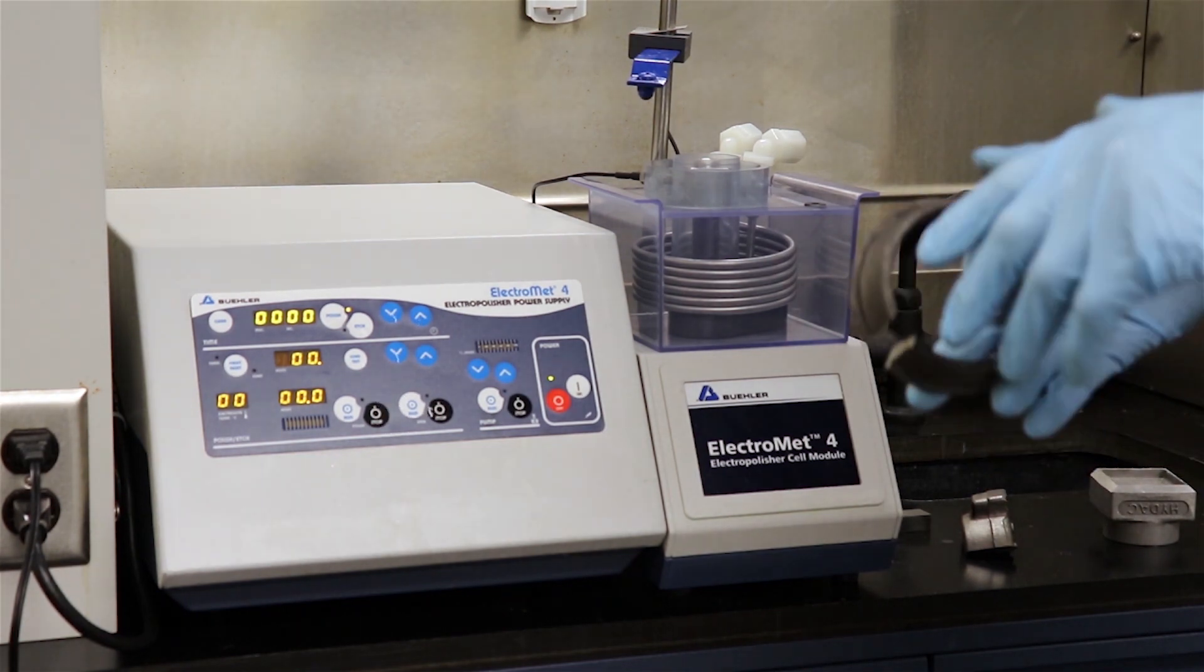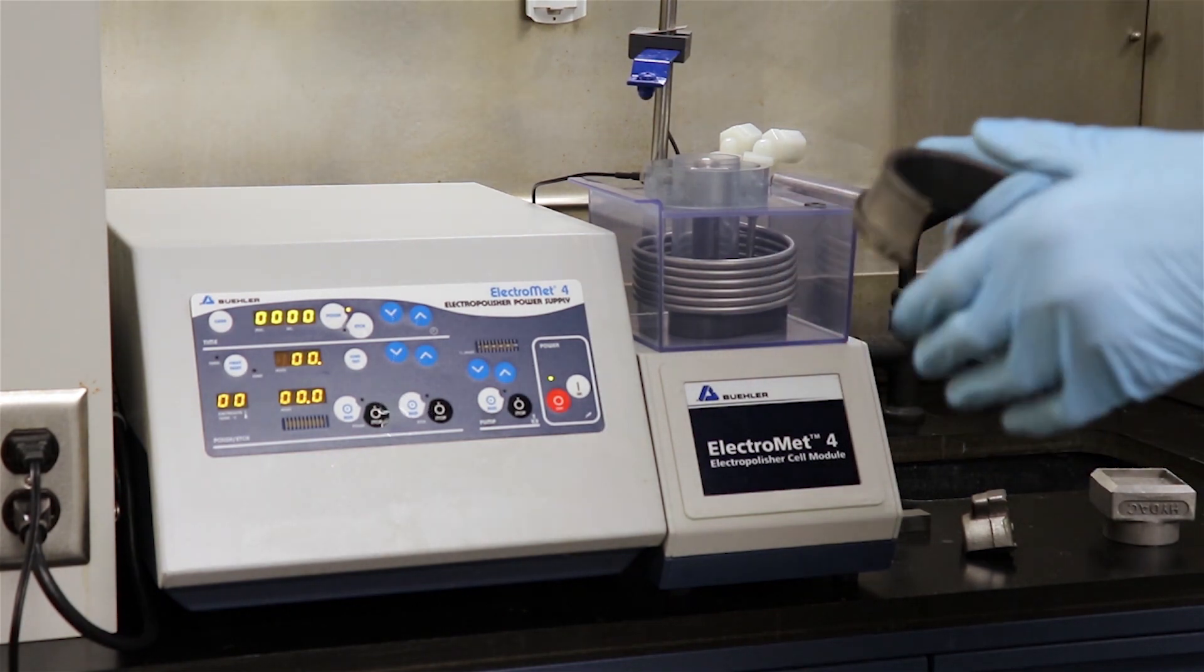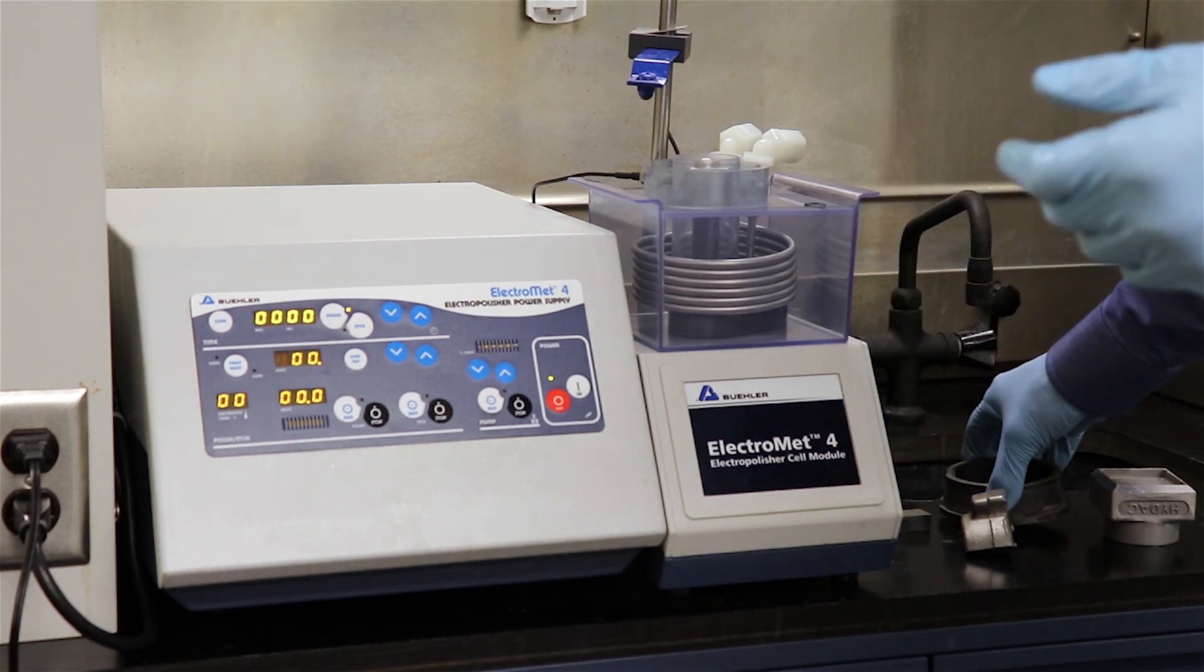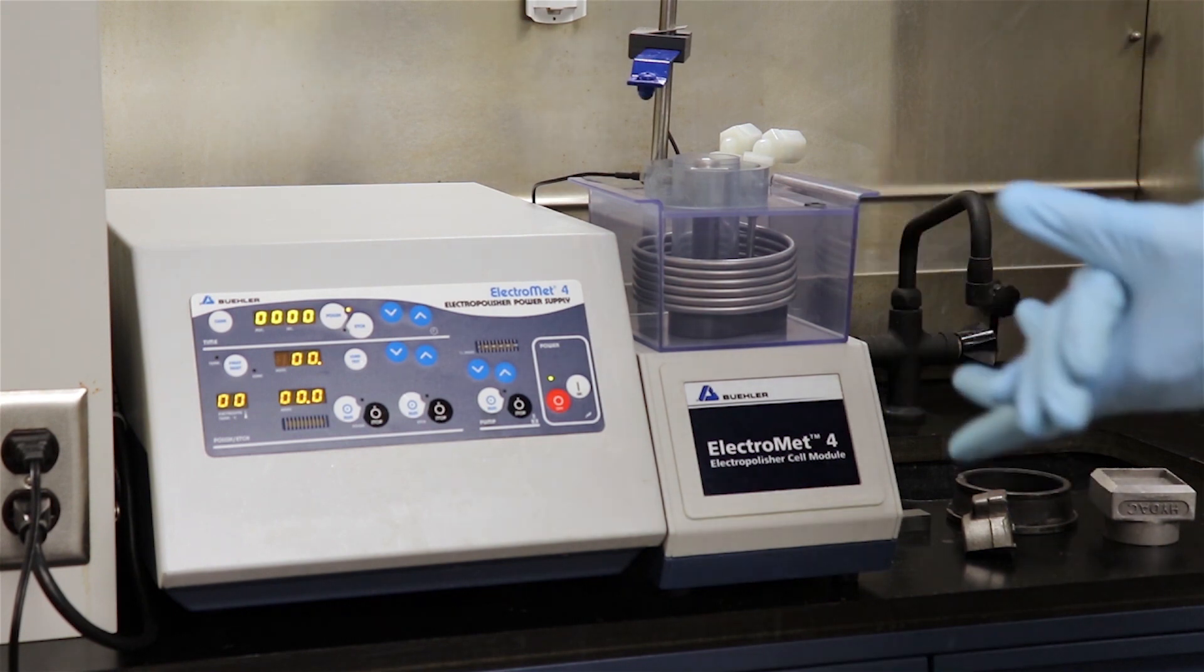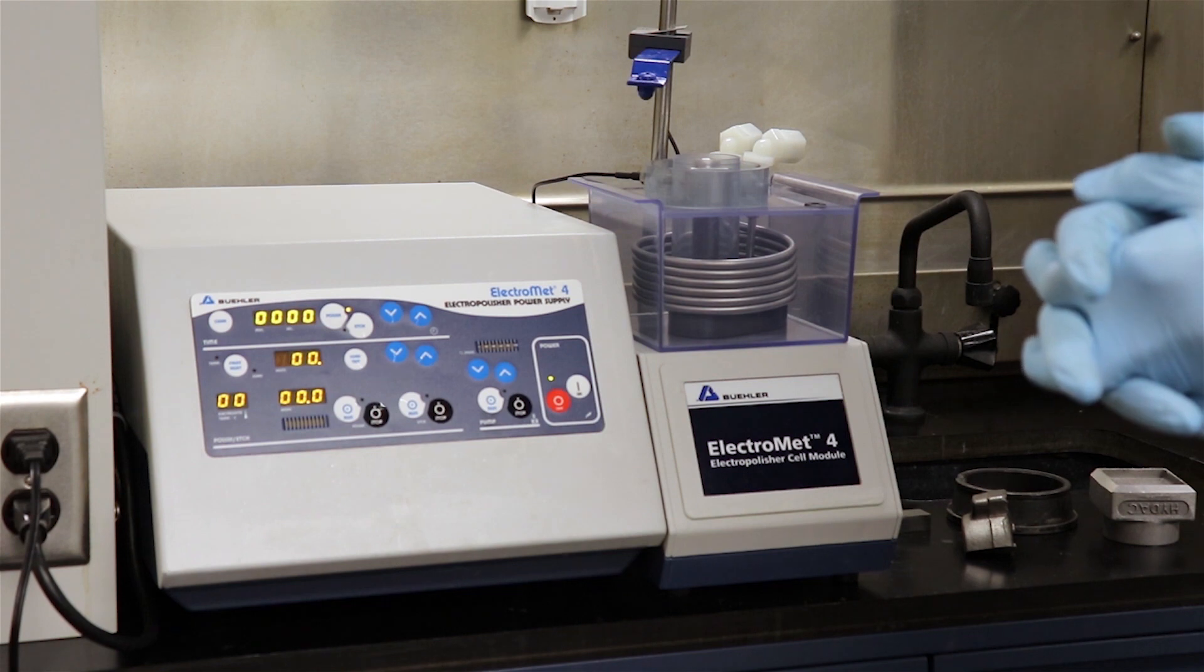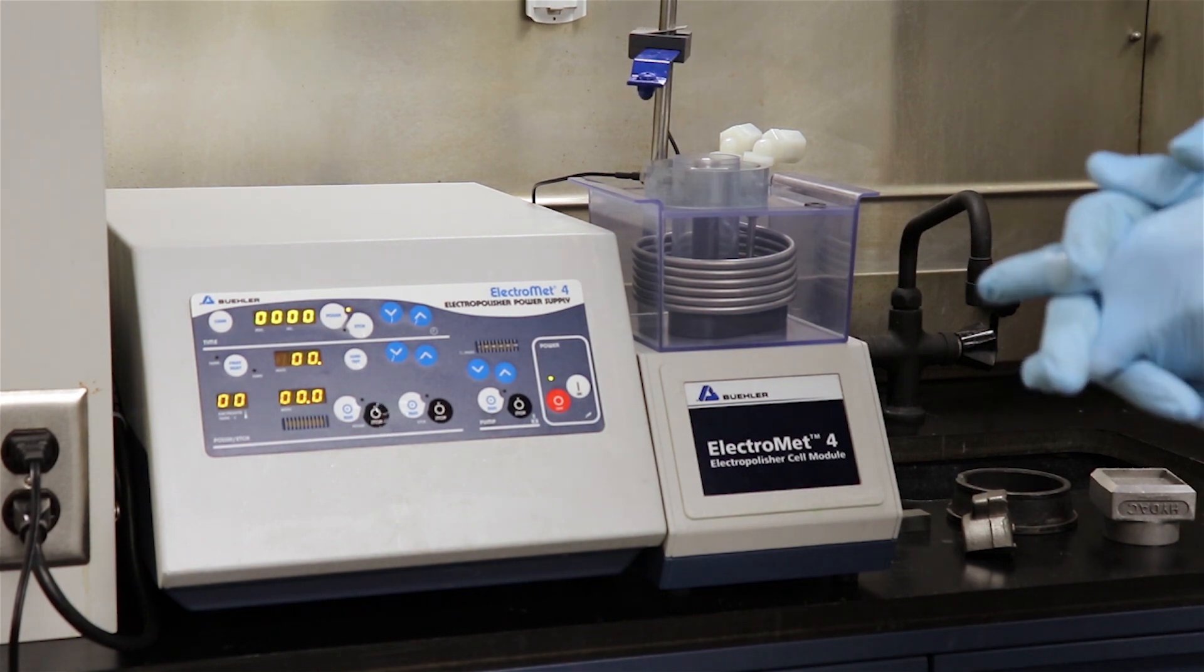Some of the materials that are particularly amenable to electropolishing include carbon steel, stainless steel, iron, copper alloys and aluminum alloys. Whether cast or forged, it works very well on all these material types.